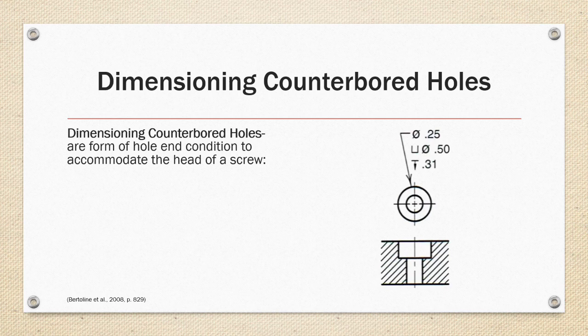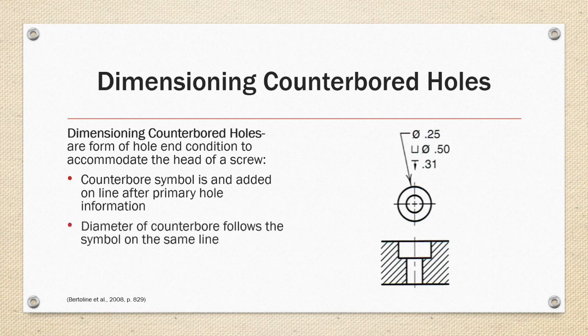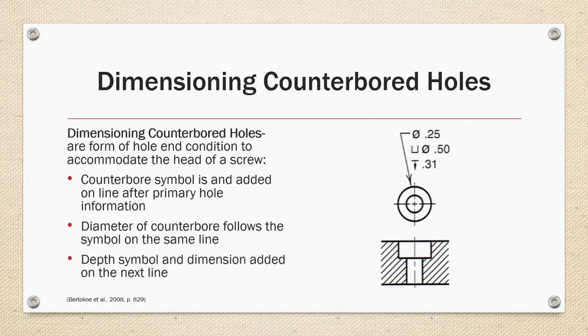Dimensioning Counterbore Holes requires the addition of the counterbore symbol is added on a line after the primary hole information with the diameter of the counterbore following the counterbore symbol on the same line. That is then followed by the depth symbol and dimension added on the next line shown in the image on the right. So in our example on the image on the right, we have a 25 millimeter through hole with a half inch diameter counterbore that is 0.31 deep.